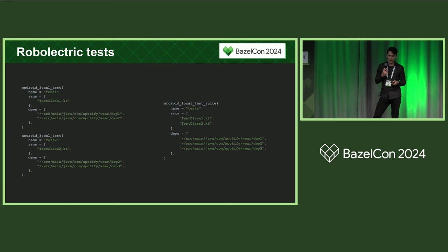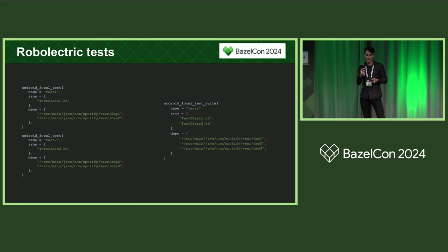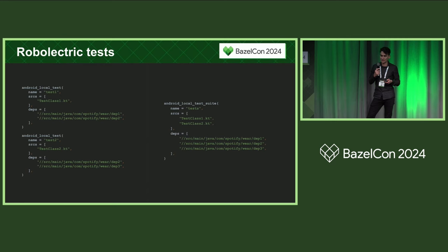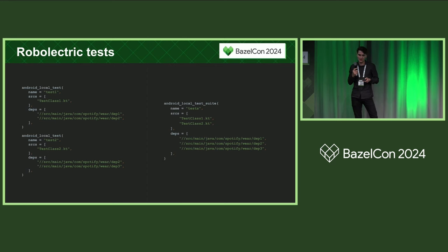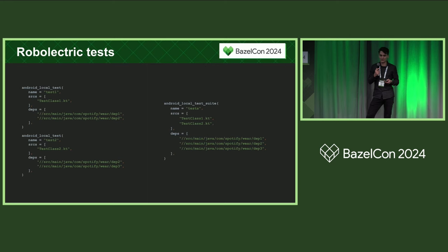For testing, we had a different issue: not too many inputs, but our outputs were quite large. Each Android local test can produce megabytes of output, and with thousands of tests that becomes a problem. We resolved this by creating Android local test suite rules that run tests for a few test classes together. This isn't the most pure Bazel approach — guidelines say every test class should have a separate target — but for us it worked well because test classes in a single package usually have similar dependencies and get invalidated for similar changes, and developers tend to run all tests in a package together.